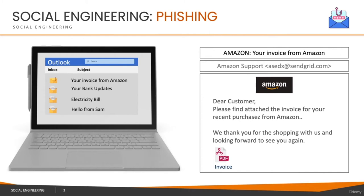On average, per email we spend roughly 10 to 15 seconds before making a decision. A lot of the time when we see the Amazon logo, even if we haven't ordered anything, out of curiosity we want to open the attachment. As soon as we open it, there's malware inside that attachment which infiltrates your system. Usually these attacks don't hide a large piece of malware within files or links because it's difficult to get through under the radar, so they use tiny droppers.